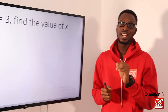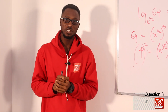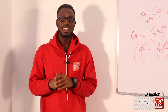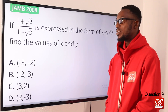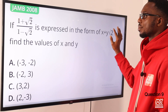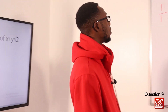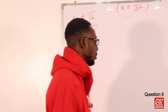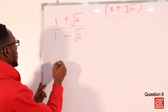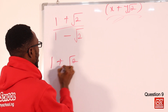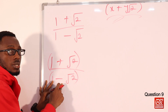Please remember to hit that like button to motivate us, click on the subscribe button, and always tap on bell notification to get alerts immediately we upload the next video content. Question 9: if 1 plus root 2 over 1 minus root 2 is expressed in the form x plus y root 2, find the values of x and y.